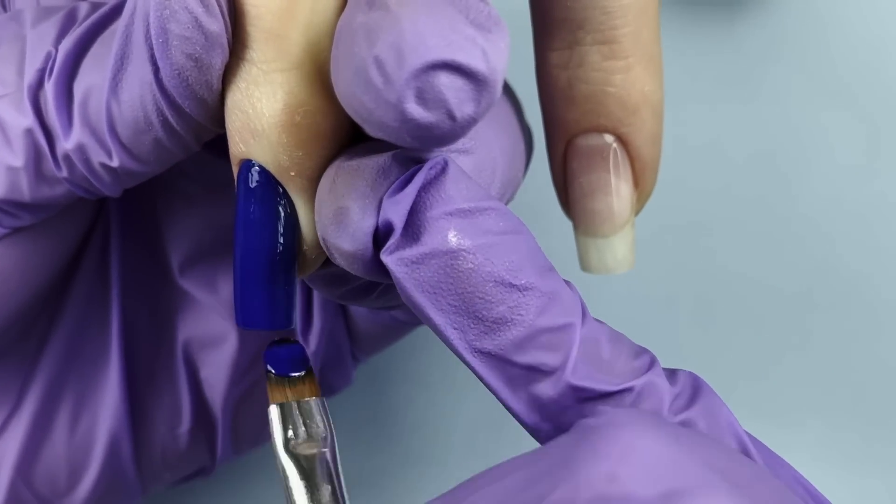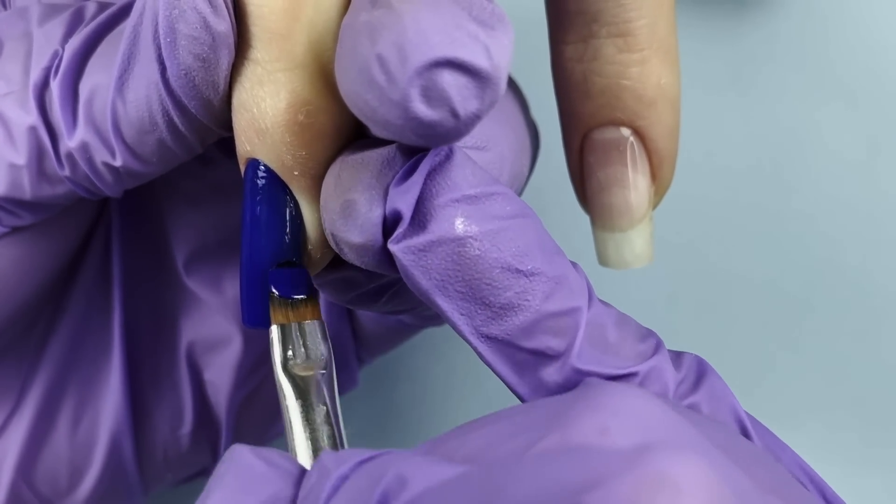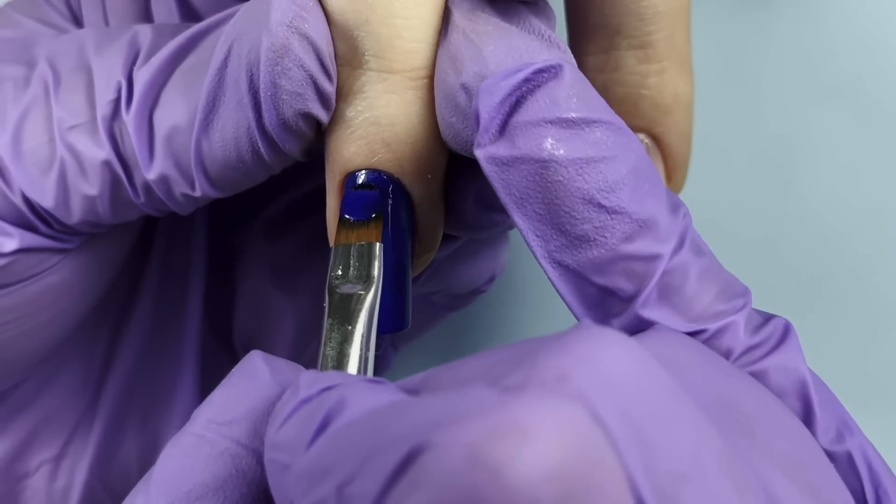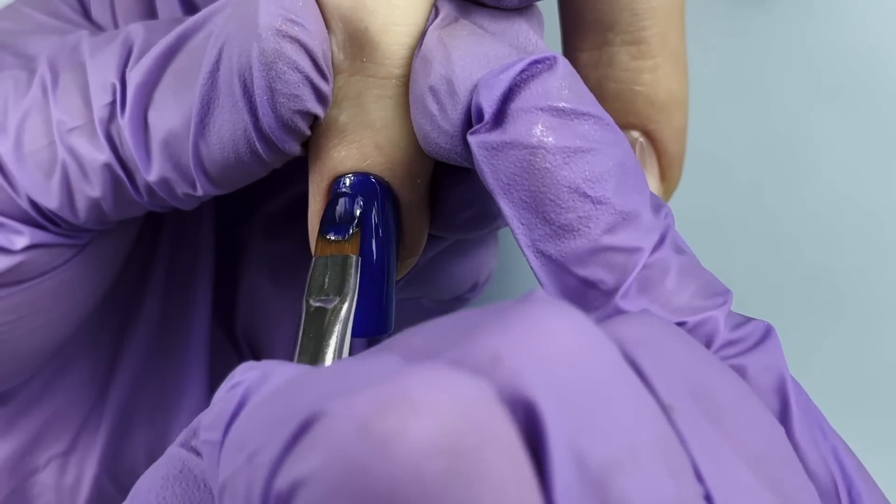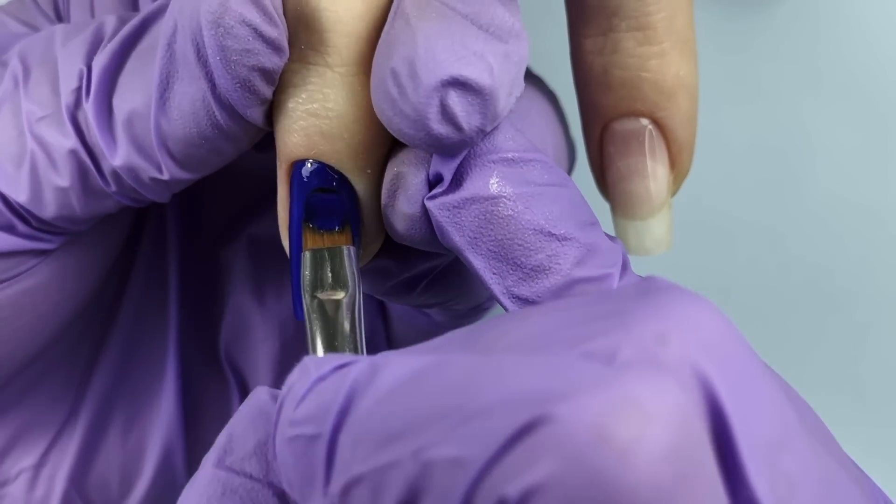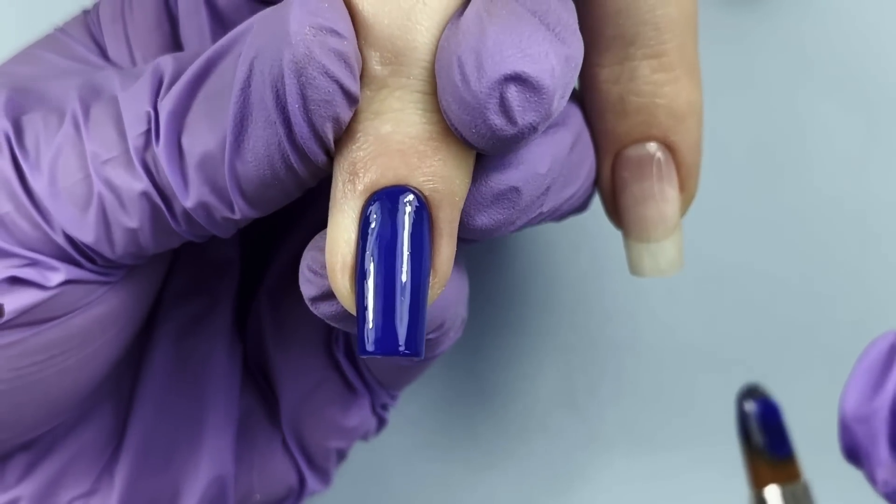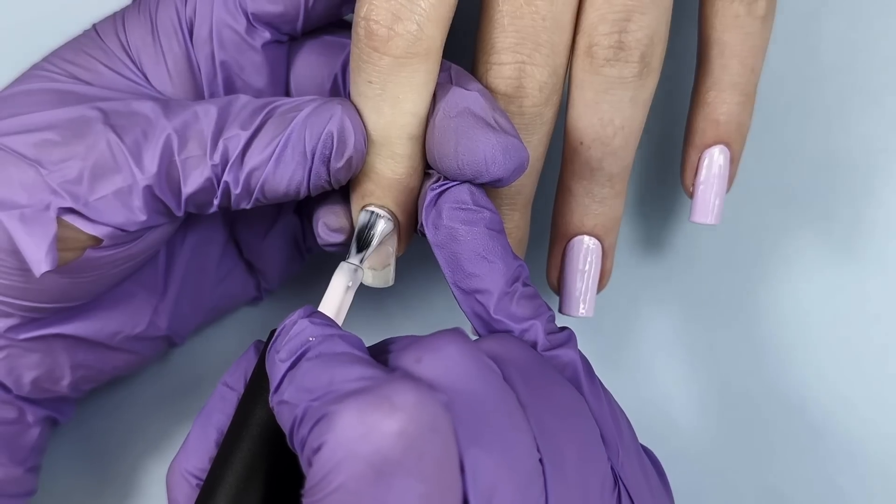But you still have to have some extra product on your brush, because if your brush is fully clean and dry you may notice that these lines from the bristles, the strokes, are visible. But if your brush is slightly covered with solid cream gel already, then it will be much easier to apply it evenly.